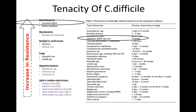C. difficile sits at the very top of the bacterial resistance scale as one of the toughest organisms to kill and disinfect. Looking at how long C. difficile can last on surfaces — you're looking at up to five months. This just points to the complexity of C. difficile and how tenacious it is as a bacterium, able to thrive and stay in the environment for a very long time.